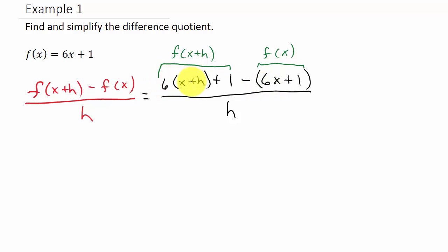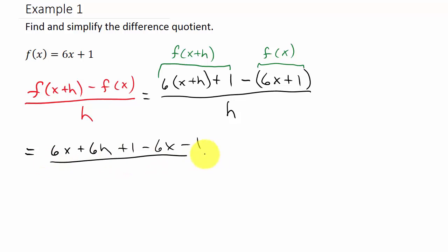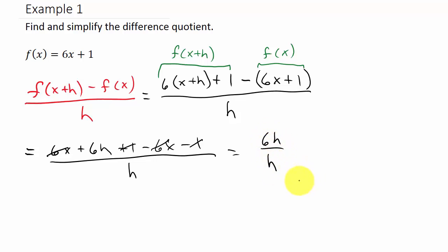I'm going to distribute the 6 and then distribute this negative 1. So that's 6x plus 6h plus 1 minus 6x minus 1, all over h. The 6x's cancel out and the 1's cancel. So I'm left with 6h over h, the h's cancel, and I'm left with 6.